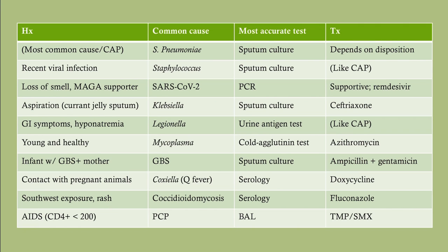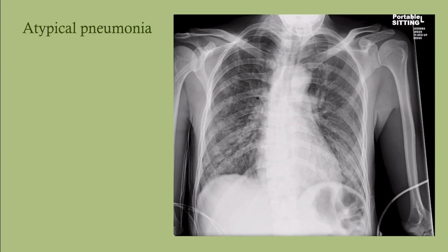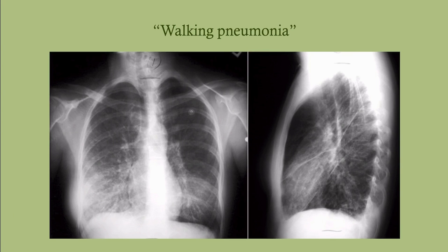Here's a cheat sheet covering everything we went over. Here's how atypical pneumonia looks on chest x-ray: imagine a young person coming in saying they just have a little cough and fever. You get the chest x-ray and see diffuse interstitial markings — that's walking pneumonia, mycoplasma.